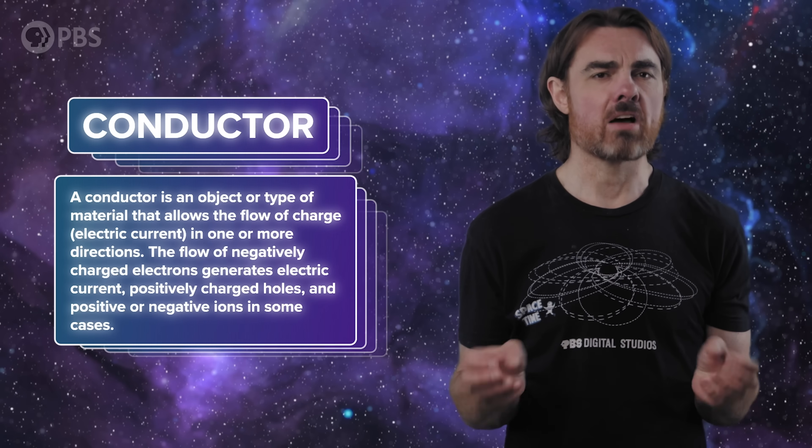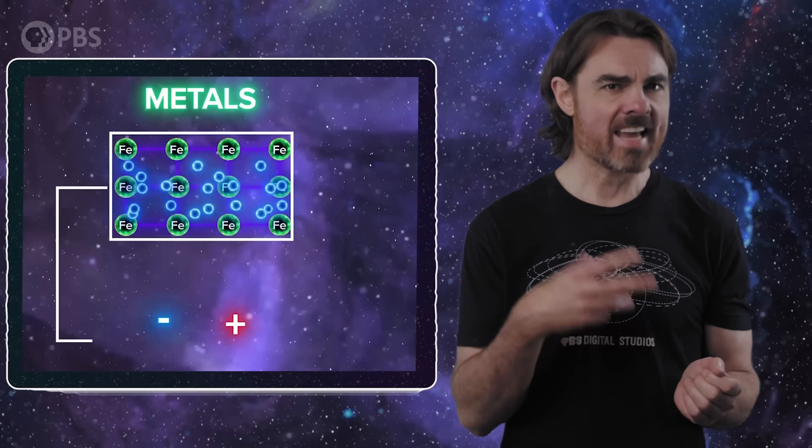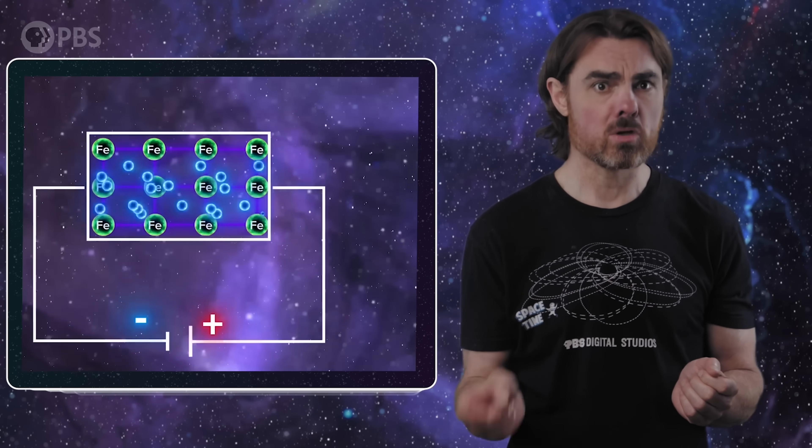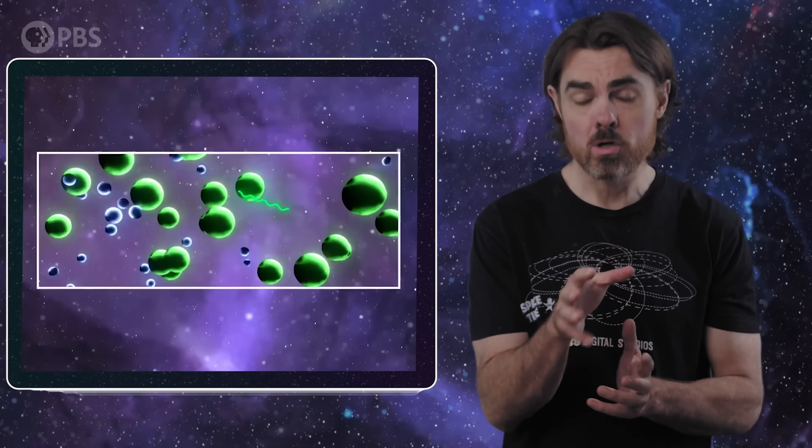A conductor is just a material in which some of the electrons are free to move. Normally, we think of electrons as being bound into their atomic orbitals. Sometimes the outer shell electrons are shared between atoms in molecular bonds. In conductors, there are either extra outer shell electrons or electron holes that can jump pretty freely between adjacent atoms. Add a charge or voltage differential across the conductor and a stream of electric charge, a current will flow.